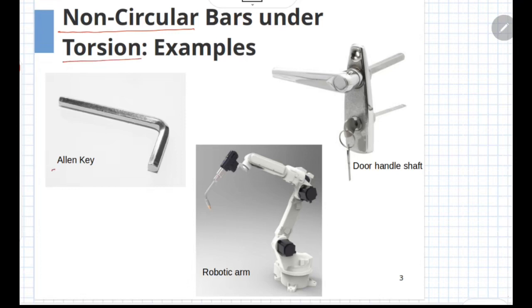The first example is that of an Allen key which is commonly used for tightening machine parts. The part which transmits the torque is having a non-circular cross-section.